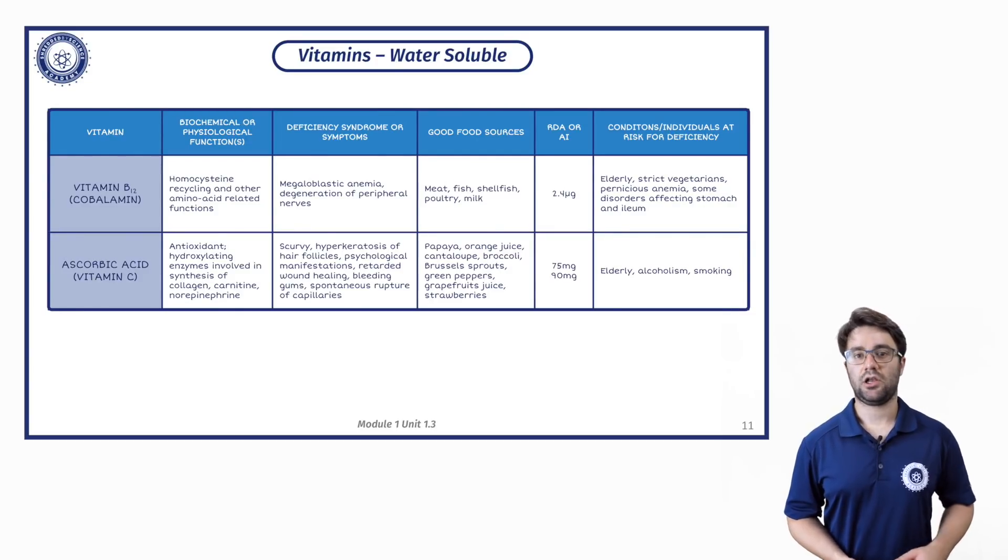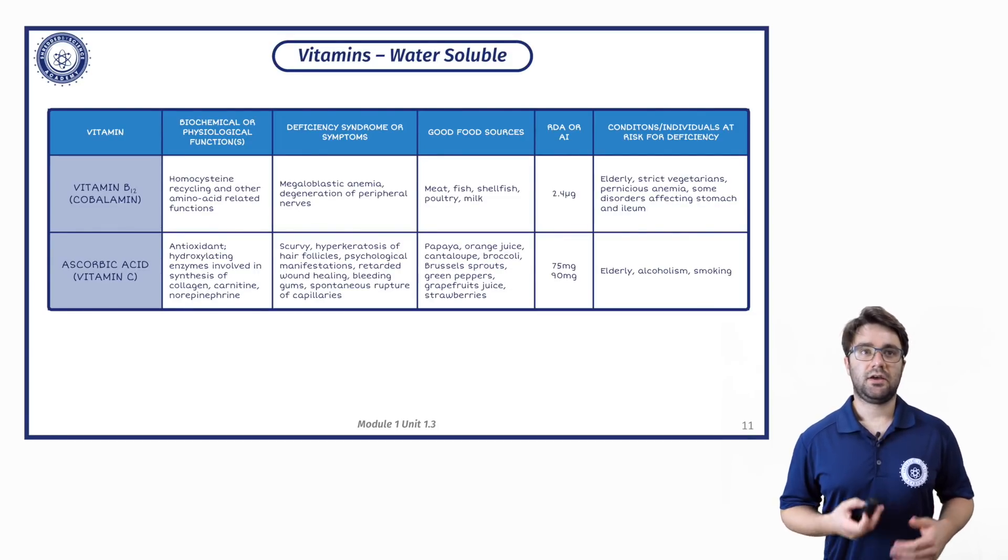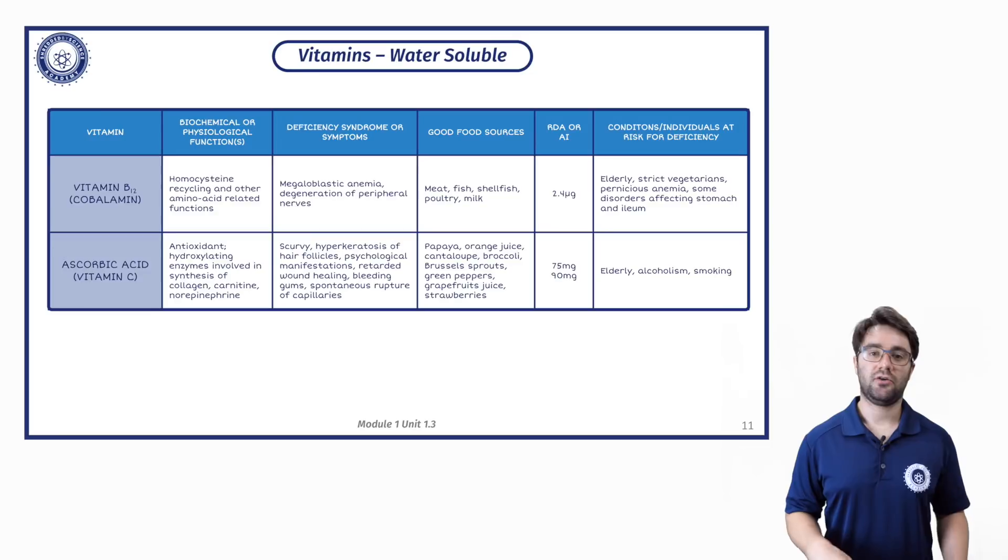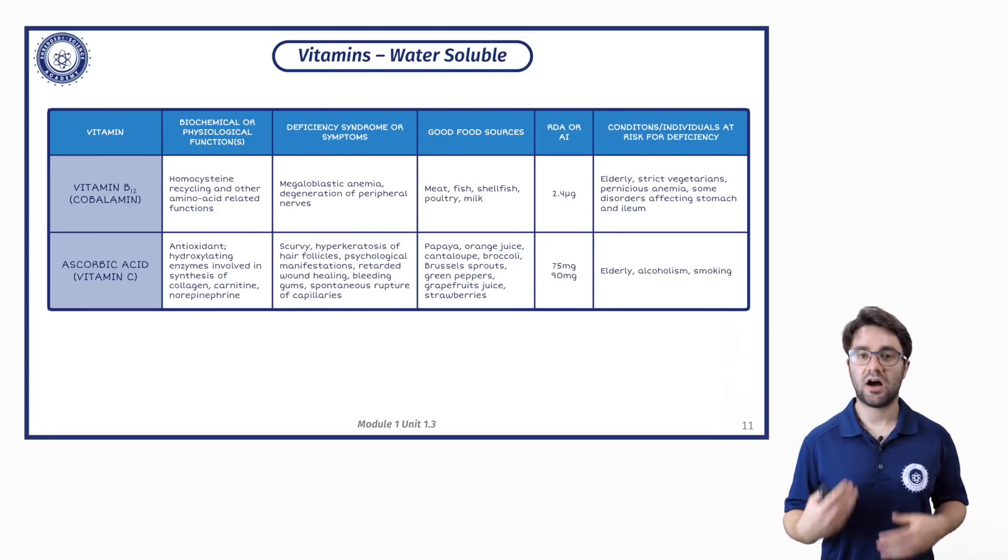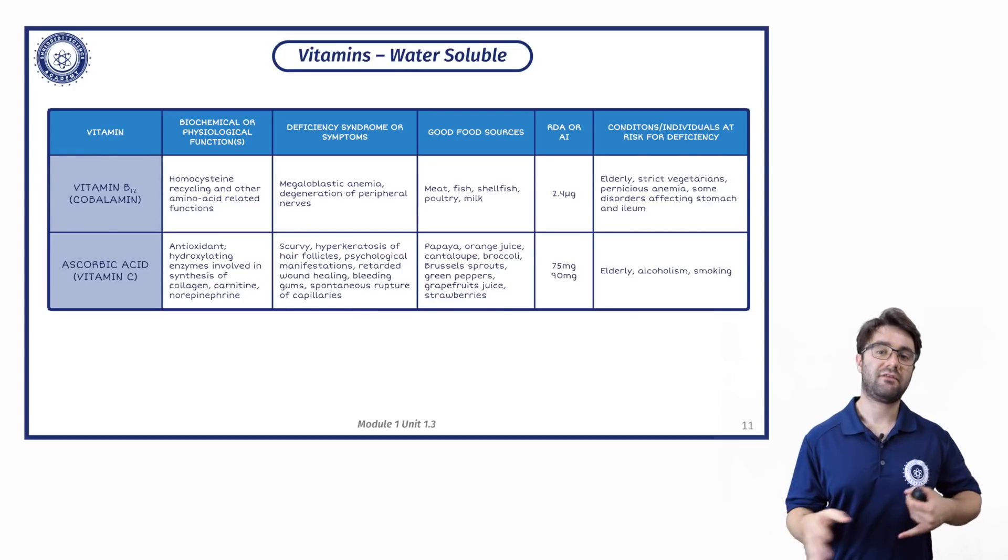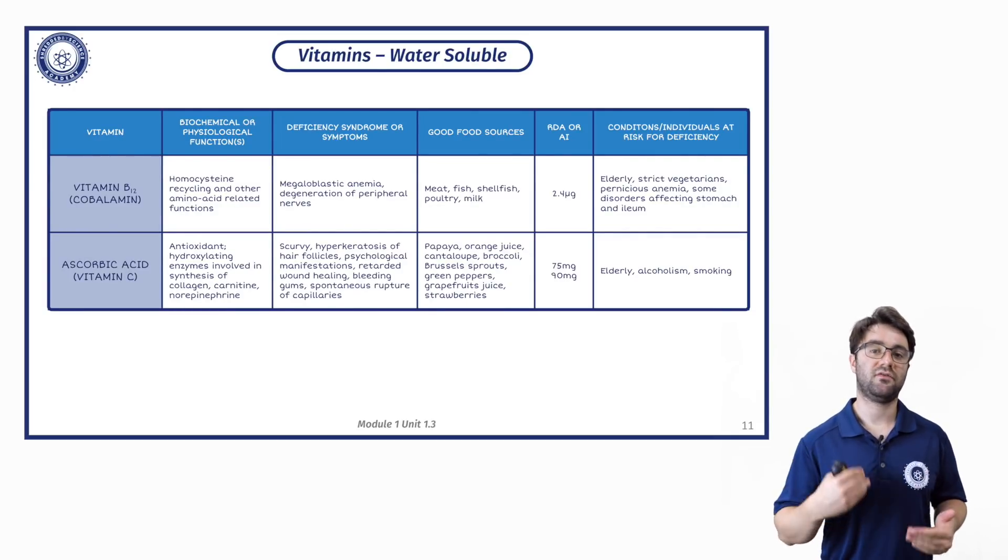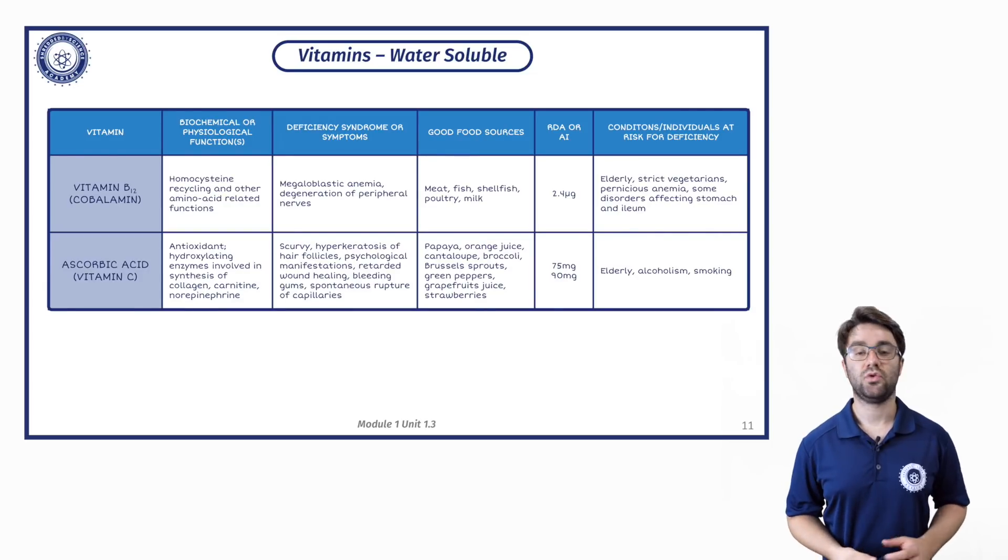It's involved in a lot of amino acid related functions. It's a pretty important vitamin. Vitamin C is one of the body's major antioxidants. It's also involved in the synthesis of collagen, which is a connective tissue in the body. Carnitine, which again is another very important molecule when it comes to the release of energy from fat.